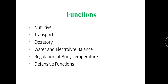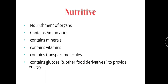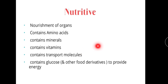The basic functions of blood include: nutritive transport, excretory function, water and electrolyte balance, regulation of body temperature, and defensive function. Blood is mainly meant for nourishing organs and the organism — it contains amino acids, minerals, vitamins, transport molecules, glucose, and much more.